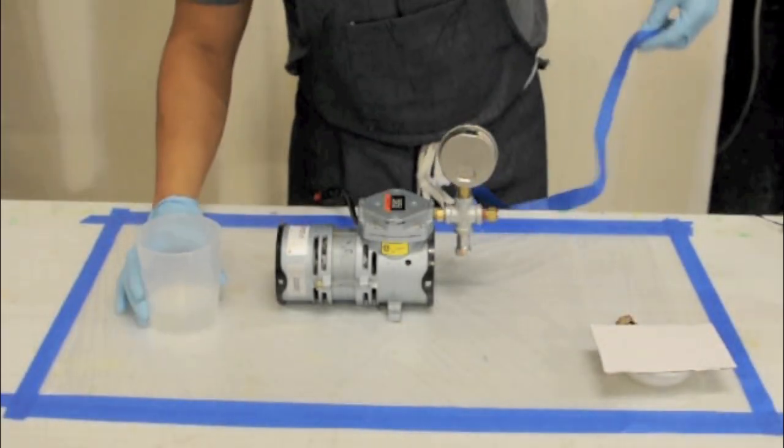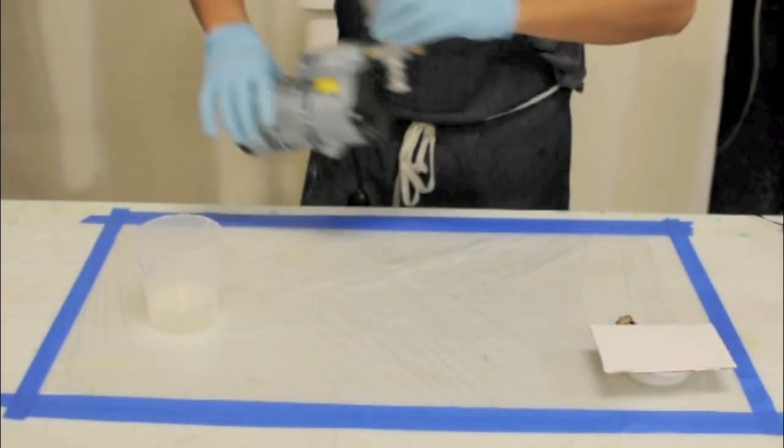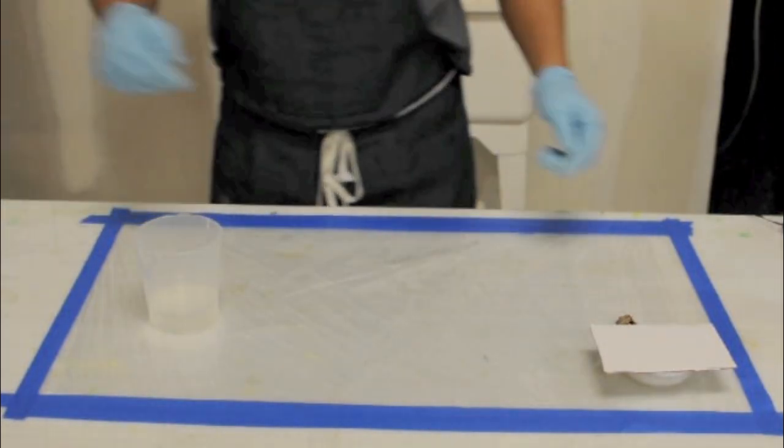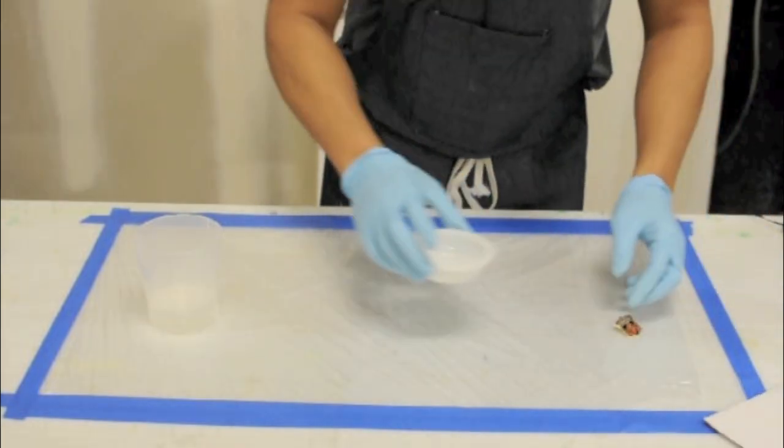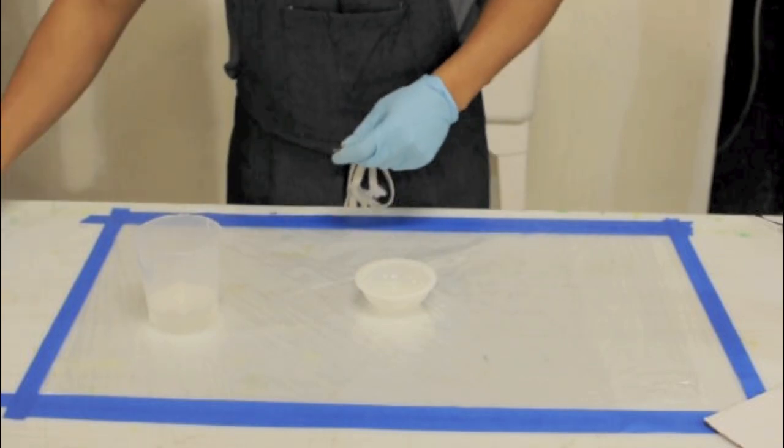Once the resin has been properly degassed, you can place the object you wish to embed into your casting. There are several steps to make sure this is done properly.